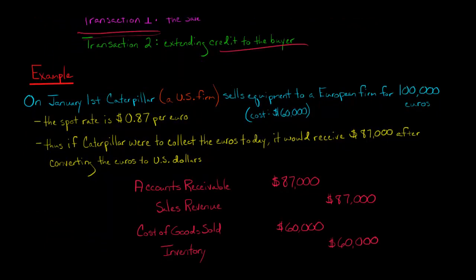okay, we've made a sale, so we're going to debit accounts receivable, and we're going to credit sales revenue. And what is the amount? $87,000.